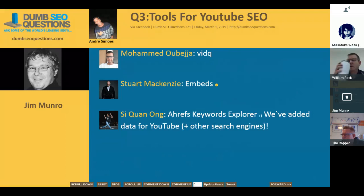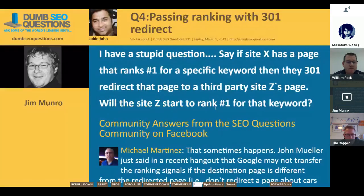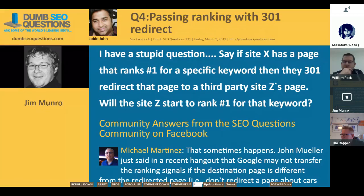Number four on our run list is from Job/John, titled 'Passing Ranking with a 301 Redirect.' He said: I have a stupid question — say site X has a page that ranks number one for a specific keyword and they 301 redirect that page to a third-party site's page. Will the third-party site start to rank number one for that keyword? Not really.